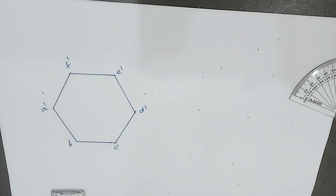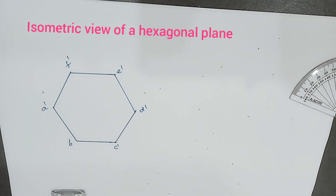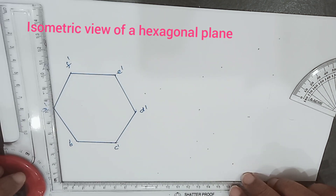As there is no direct way of drawing the isometric view of a hexagonal plane, we have to enclose this hexagon in a rectangle — that is a four-sided object. With reference to this four-sided object, we have to construct the isometric view of the hexagonal plane.